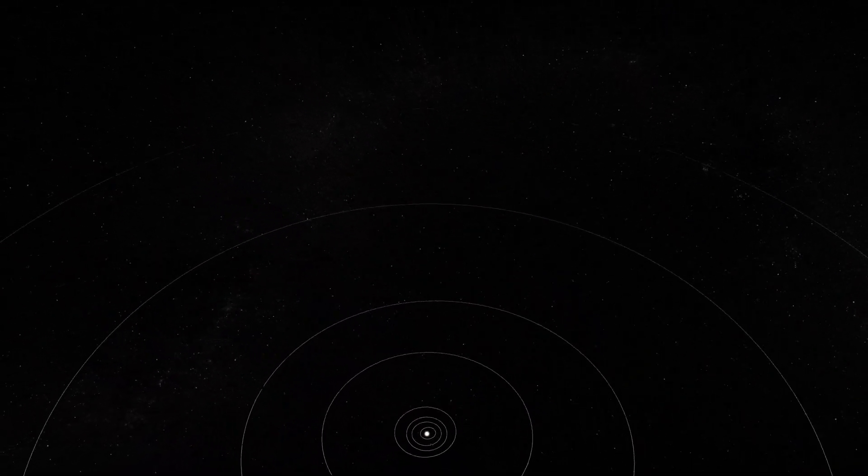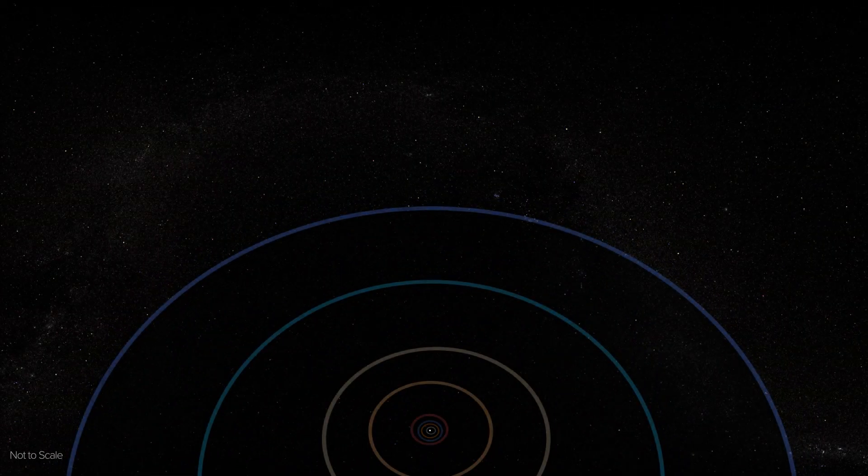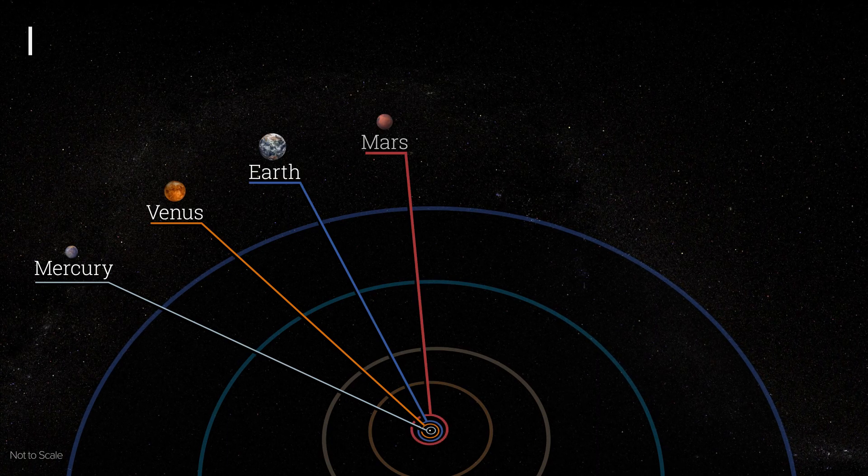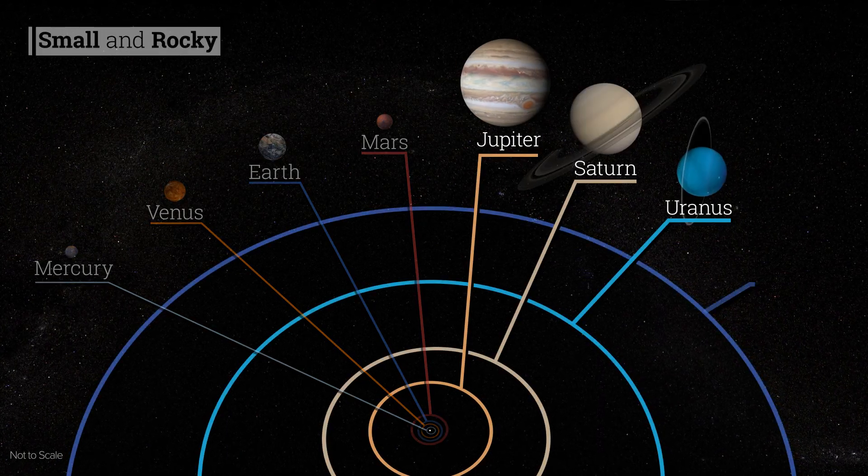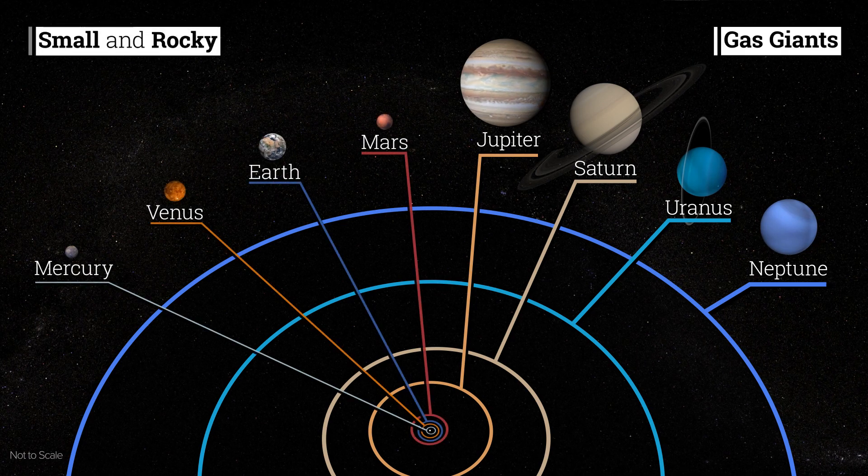We're one of eight planets, all different from one another. The ones close to our sun are small and made of rock. The ones farther out are huge and made of gas.